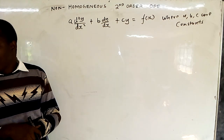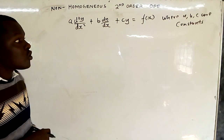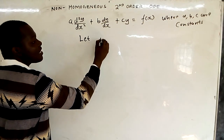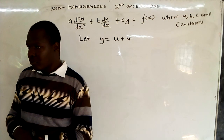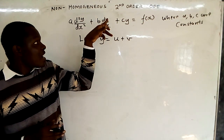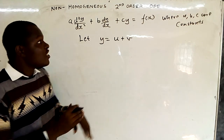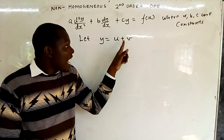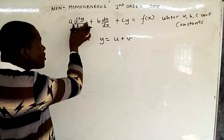To solve the second-order non-homogeneous ODE, the first step is to let y equal u plus v. If you let y equal u plus v, wherever there is y, you substitute u plus v, and you are going to get two equations — one in terms of u and one in terms of v.